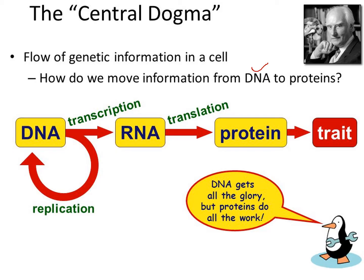If you look at the central dogma of DNA information transfer, you can see that DNA transfers genetic information through the transcription process to RNA, and this RNA translates the information to protein. This RNA will synthesize specific proteins, and these proteins will make the offspring or traits of the next generation.